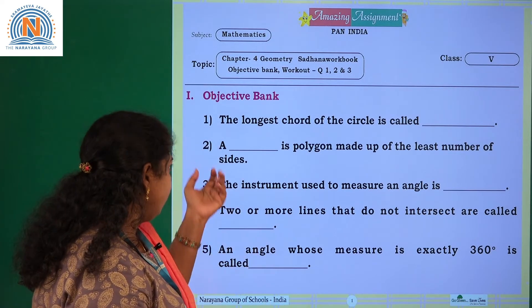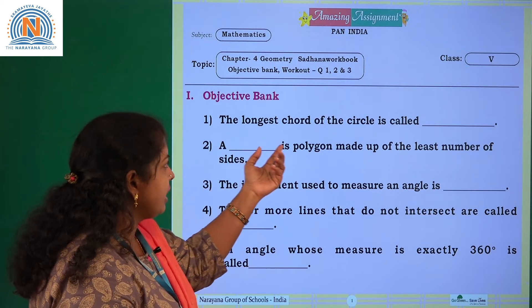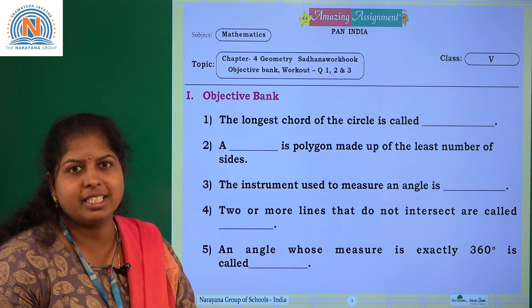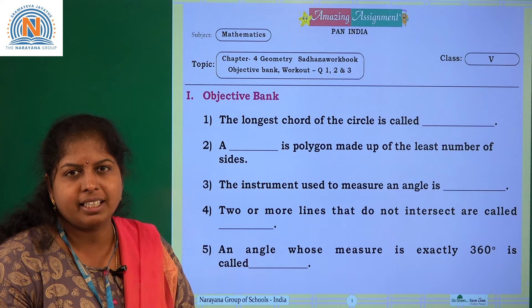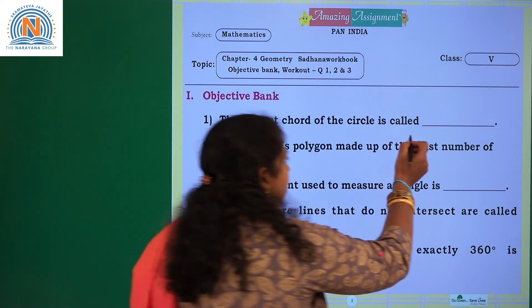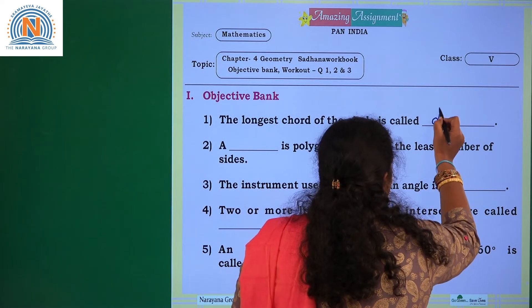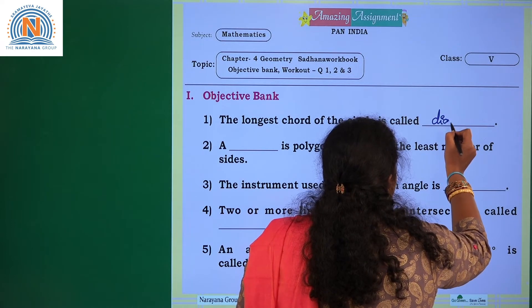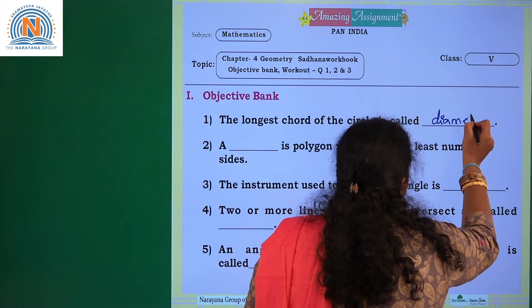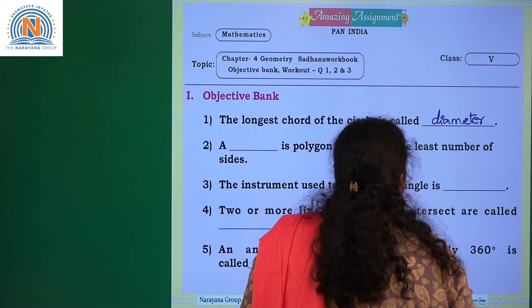From the workbook, the first question is: the longest chord of the circle is called what? The longest chord of the circle is the diameter. The diameter of the circle is known as the longest chord.